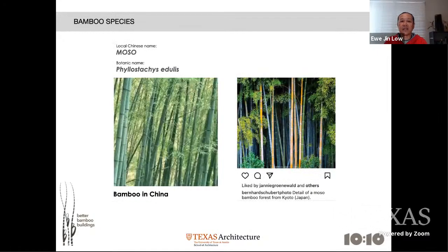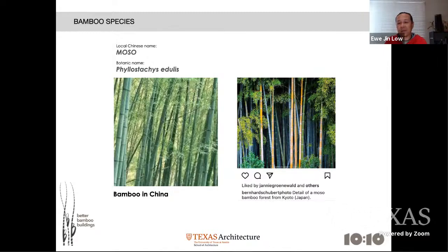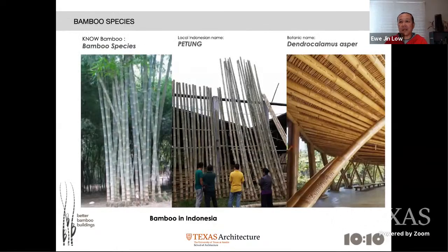In China, you have Moso — Phyllostachys edulis. This is running bamboo. Guadua is more clumping bamboo. Moso is pretty regular in diameter and length, very straight — good for construction and for furniture as well.